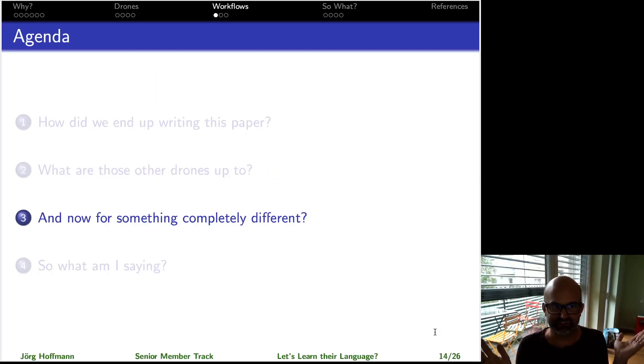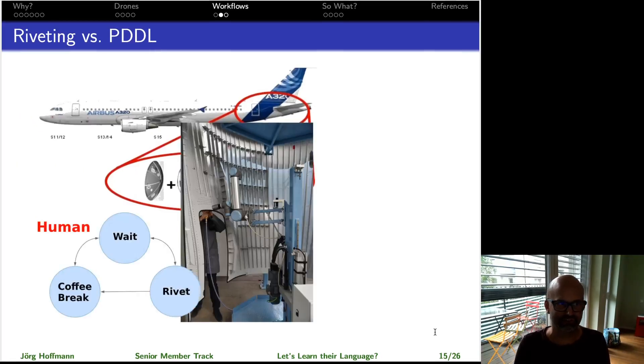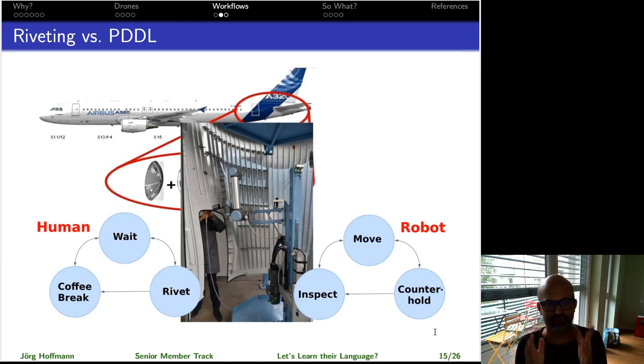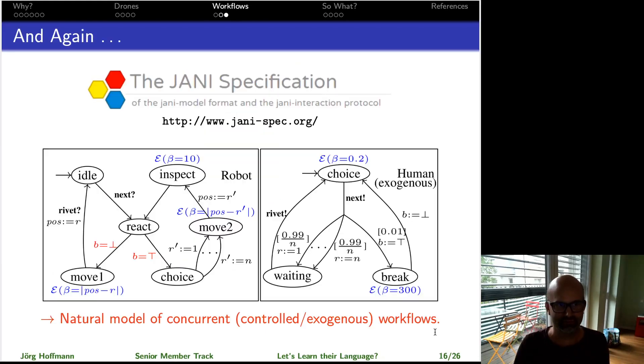Now for something completely different, question mark, and we're going to just breeze through this. Student comes along, wants to work on the topic of riveting an aircraft where a robot works together collaboratively with a human. Again, you have two processes, two workflows that execute concurrently, and writing down an automata model is just super nice and natural. Writing it down in PDDL is very difficult.